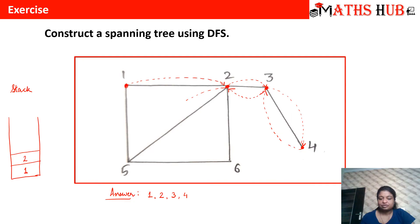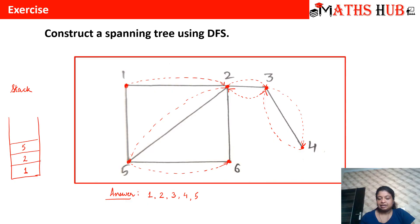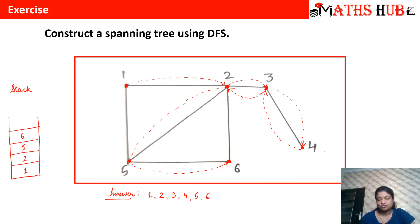If we go to vertex five, we add five to the answer and to the stack. From five, the adjacent vertices are vertex one and vertex six. Vertex one has already been travelled, so the only choice left is vertex six. We move to vertex six and put it in the answer and the stack. From vertex six, the only adjacent vertex was vertex two, which has already been travelled.